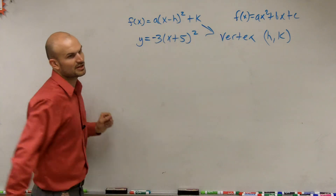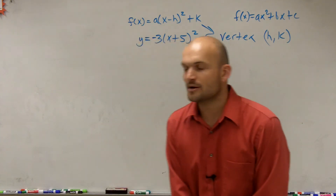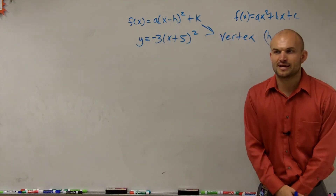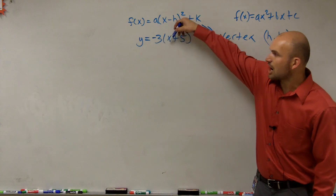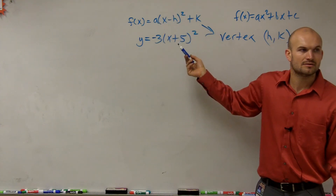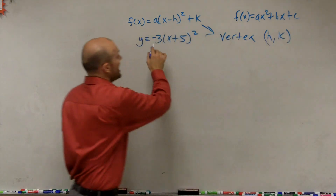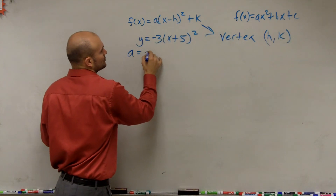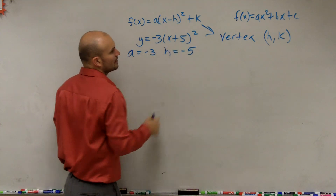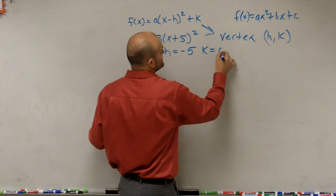So let's go and look at this problem right here. Because what it says is, write it first in vertex form, and then determine what h and k are. So is this already in this form? Well, our a is equal to negative 3, our h is equal to negative 5, and our k is equal to zero.